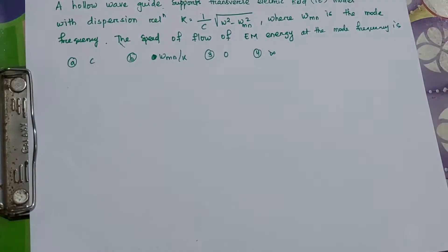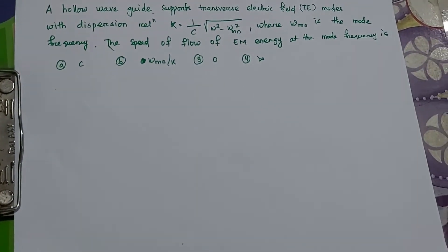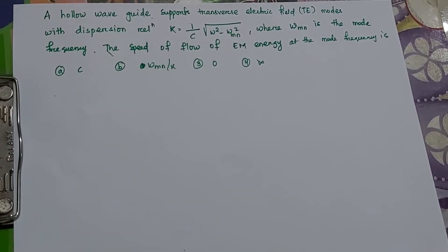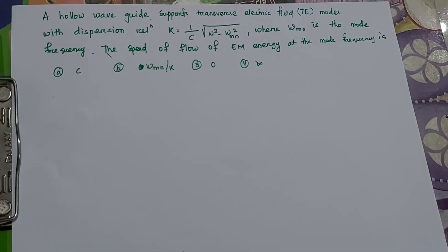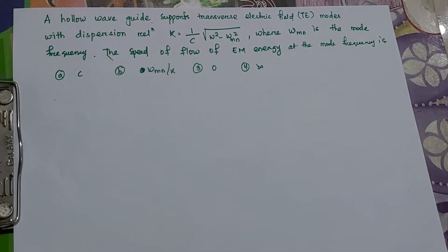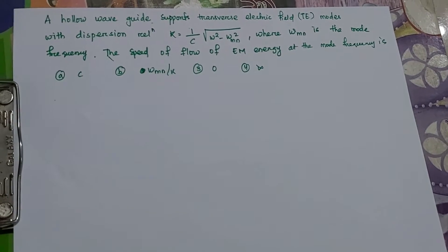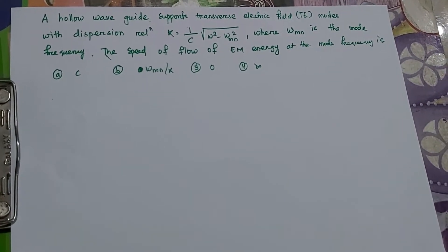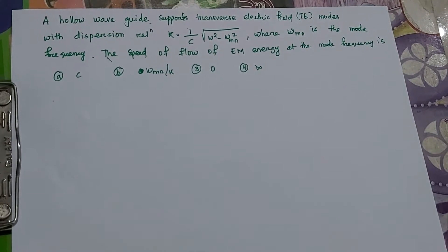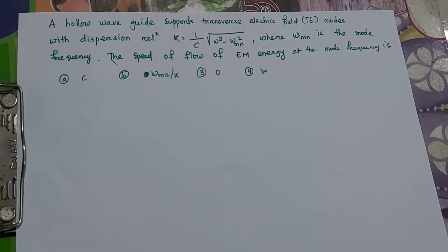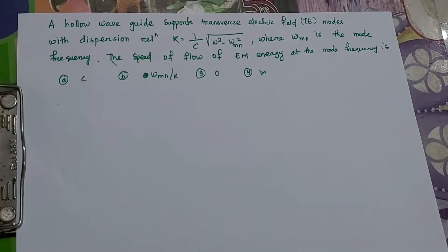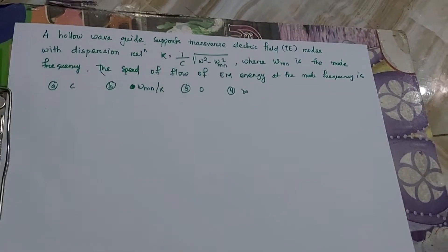If the z-component of the electric field Ez is zero, that is a TE mode. If the z-component of the magnetic field Bz is zero, that is a TM mode or transverse magnetic mode. If both Ez and Bz are zero, we call it a TEM mode.